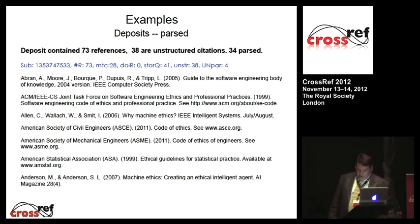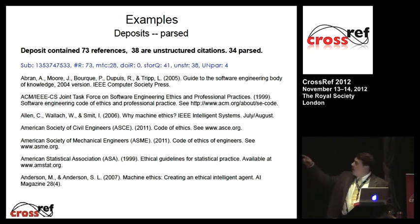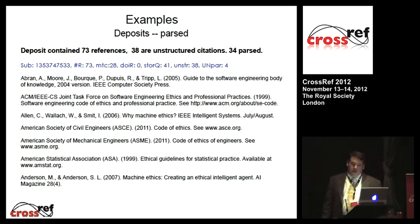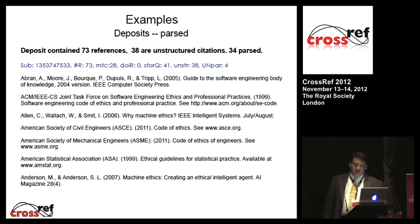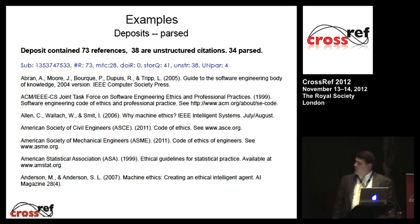Now looking at some deposit process data. It's harder to examine since this isn't an interactive form — it's happening behind the scenes on your data. The blue line is a log reference from a deposit. The pound-R is the number of references that came in; UNSTR is the number of unstructured citations in this deposit — 38. UNPAR is unparsed — the ones not successfully parsed. In this deposit, 34 out of 38 were successfully parsed. The citations pasted in show well-formed, well-formatted citations with fairly complete data — you can see why that would work.